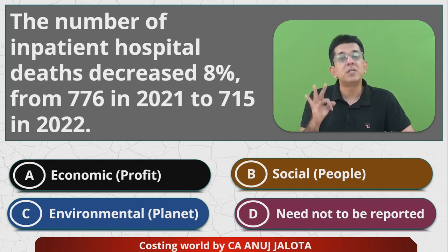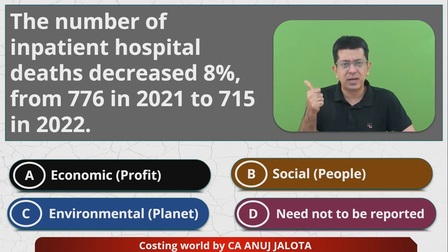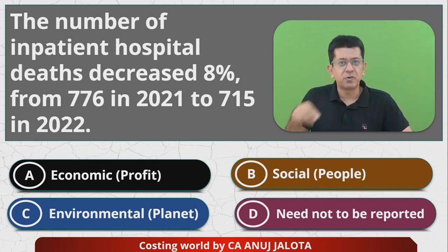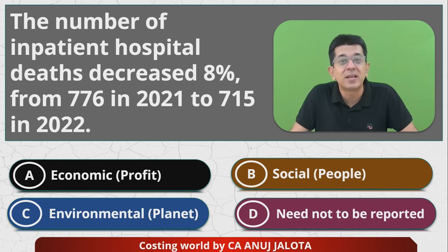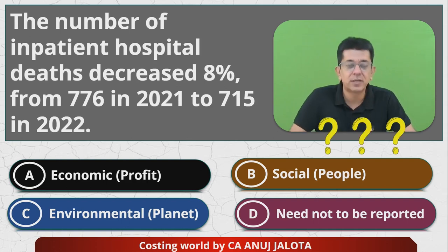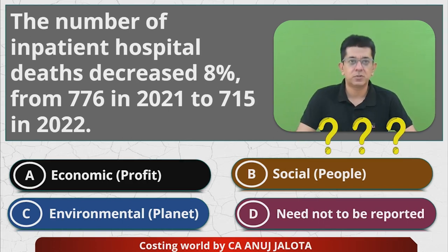This question is all about triple bottom line, where there are three P's: you have Planet, you have People, and you have Profit. So this information will get reported under which of the three — that is what you have to be answering. Please take the time to answer it now.